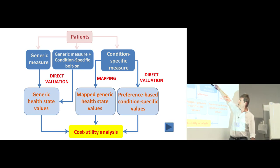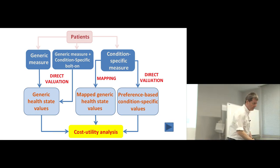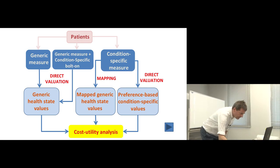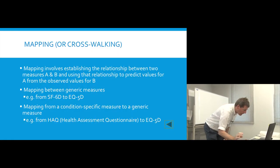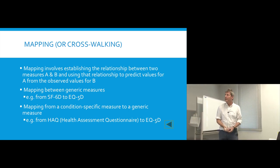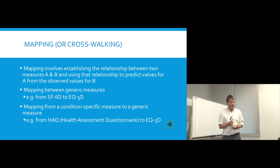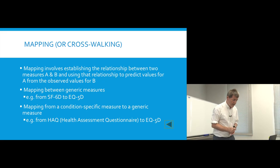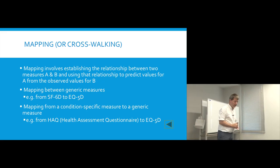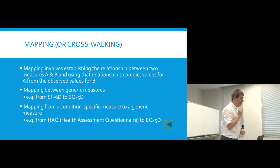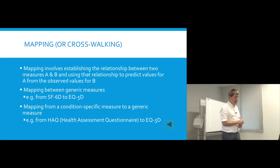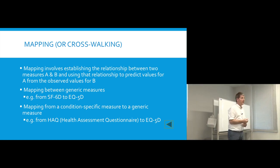I'm going to talk about condition-specific data and mapping to a generic measure. Mapping involves establishing the relationship between two series of numbers or two measures, A and B, and using that relationship to predict values for A using the observed values for B.